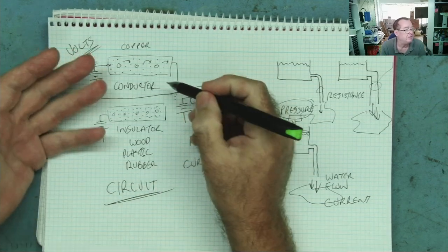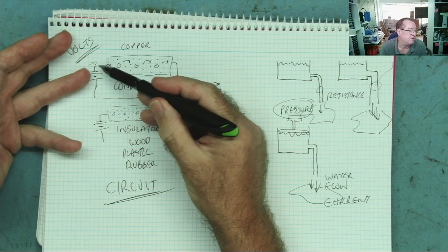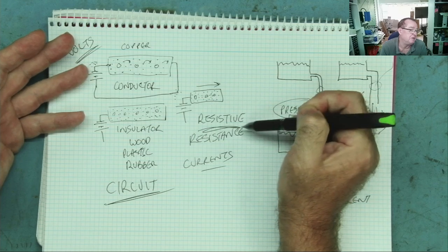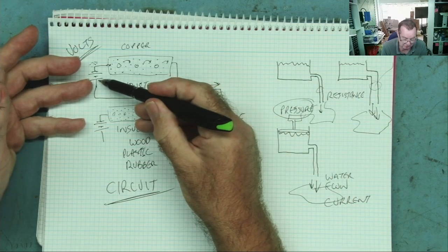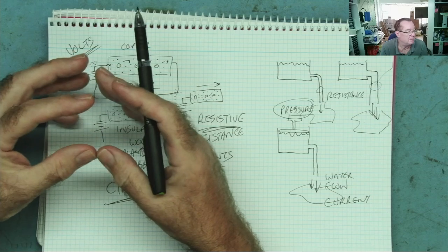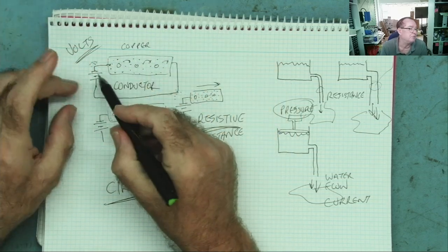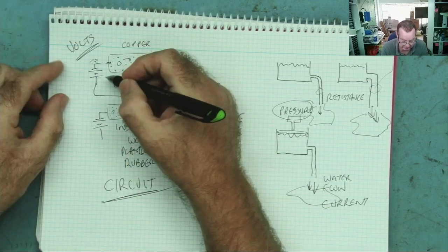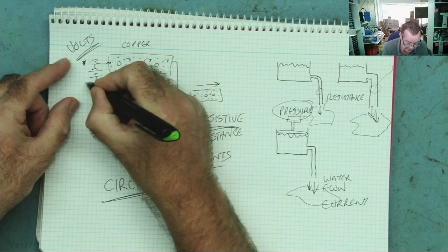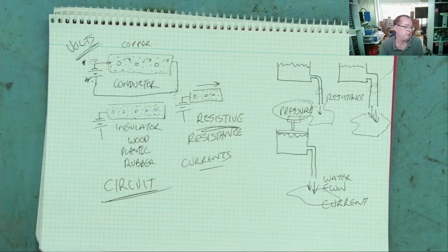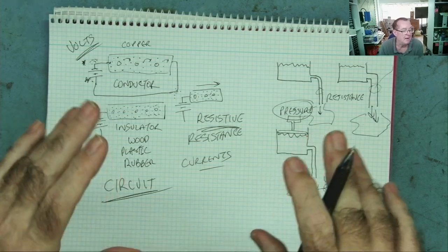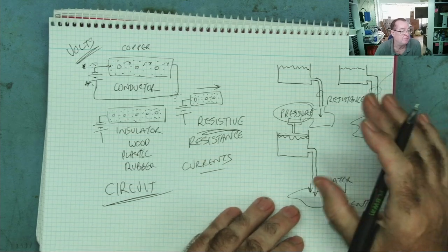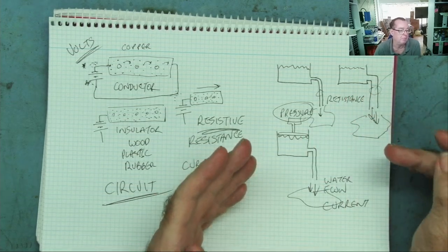For electrons to flow, we need what is called a circuit — a path from the negative plate of the battery, where there are lots of electrons, through the conductor or resistive material, back to the positive end of the battery, where there's a lack of electrons. Gradually, all the electrons from the negative end make their way through and end up at the positive end. Eventually there's the same amount of electrons on both sides, the battery goes flat, and the current stops.